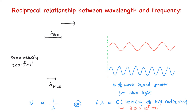Since all types of electromagnetic radiations have the same velocity, if we are given the wavelength of any electromagnetic radiation, we should be able to calculate its frequency and vice versa. This is one of the most common questions asked in the exam.